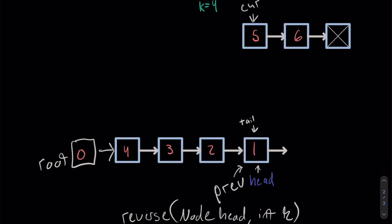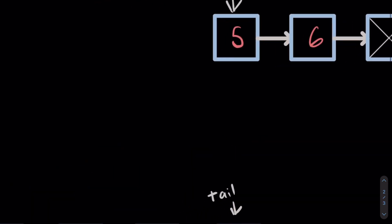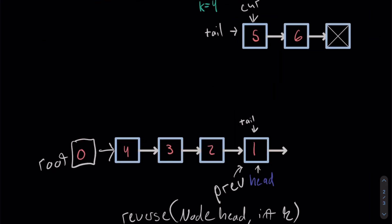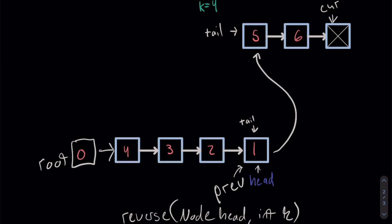Just like before, first we're going to create a pointer variable called tail pointing to cur's original location. Then we're going to walk cur up the list until it's either at a multiple of K or until cur is null. In this case, cur becomes null before we find a multiple of K, so we just say prev.next equals tail. Now our list is 0, 4, 3, 2, 1, 5, 6. To get rid of the 0, all we need to say is return root.next, giving us 4, 3, 2, 1, 5, 6 — the expected output.